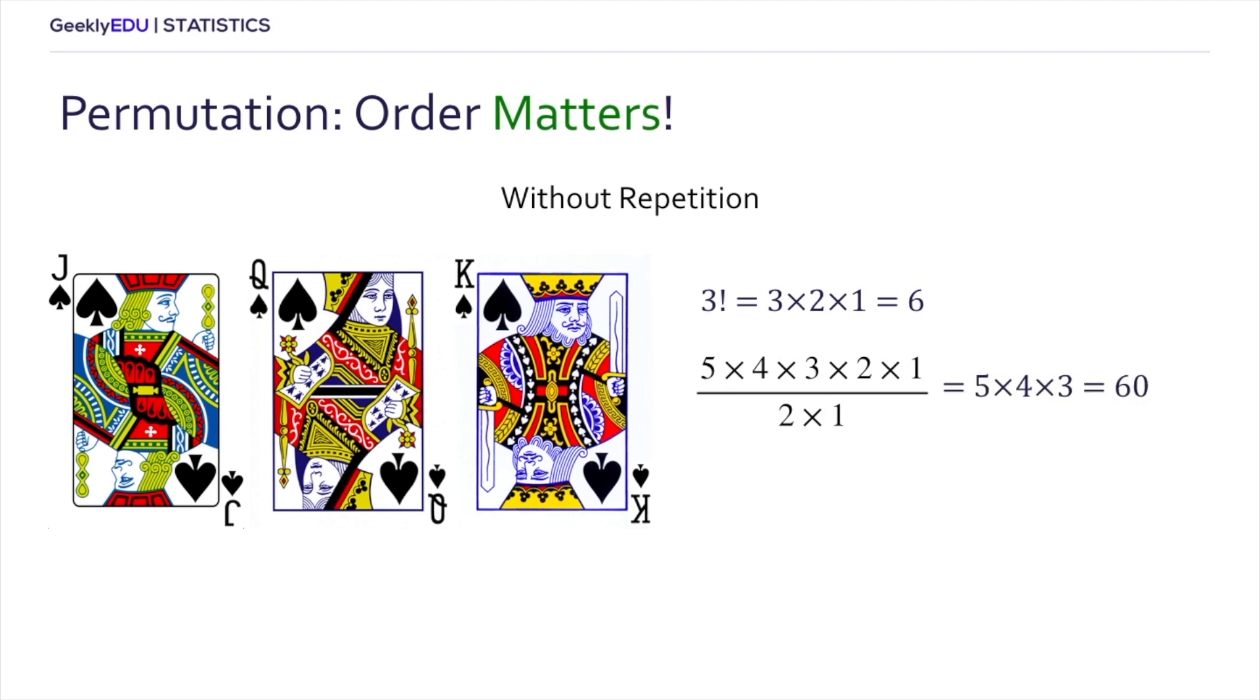So we have 60 possible permutations. Now the general formula looks like this: nPr equals n factorial, where n is the total number of items in our set, and r is the number of items that we are going to draw.